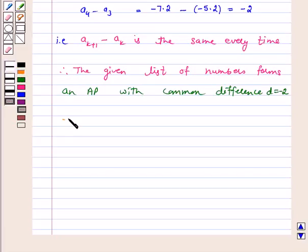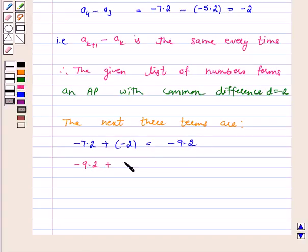The next three terms are: minus 7.2 plus minus 2, which is equal to minus 9.2. Then minus 9.2 plus minus 2, which is equal to minus 11.2.